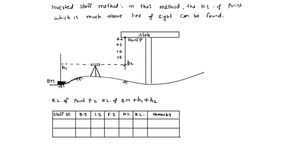First, staff station is at the benchmark. Let us take the RL of benchmark as 100. Now backsight is h1.